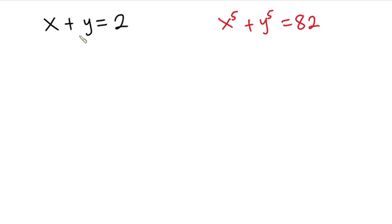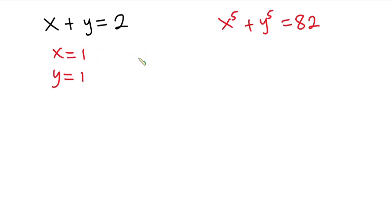We have x plus y is equal to 2. From here I will assume that x is equal to 1 and y is also equal to 1 — these are not the only numbers that add up to 2, it's just an assumption. From here I will introduce a zero variable: plus or minus m, and share this among these equations. So x equals 1 plus m, and y equals 1 minus m. If you sum these two equations you still get 2.